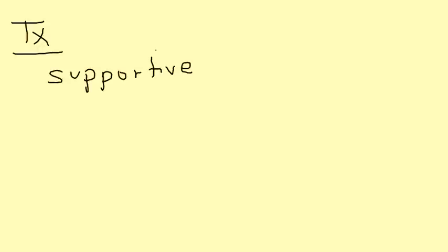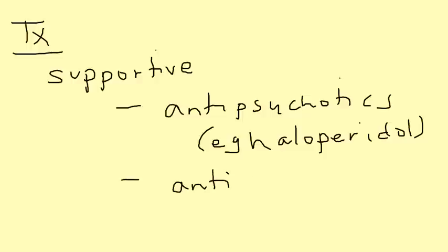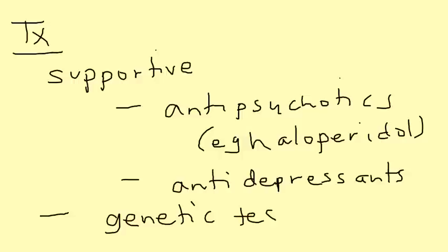Unfortunately, there's no cure for Huntington's, so the treatment is really supportive — meaning managing the symptomatology. The agitation and psychiatric abnormalities are managed with antipsychotics, such as haloperidol and several others. Antidepressants are used to manage the depression component. Also, part of the management plan is doing genetic testing on relatives, because it's an autosomal dominant disorder.